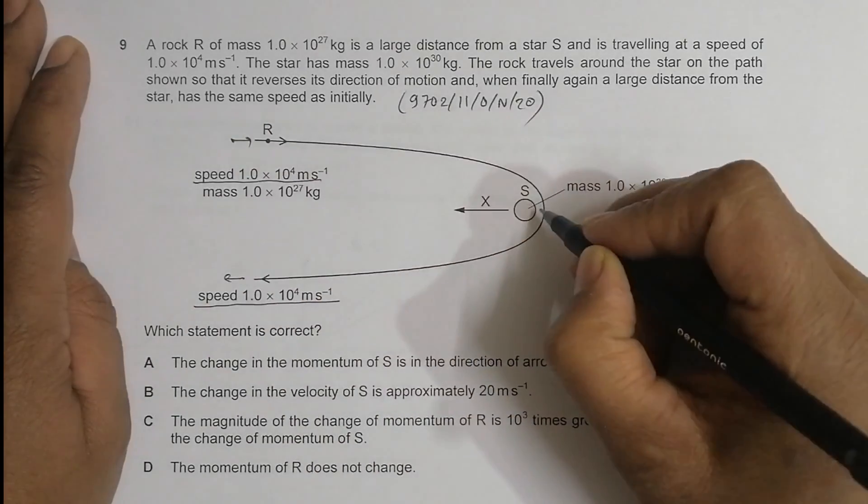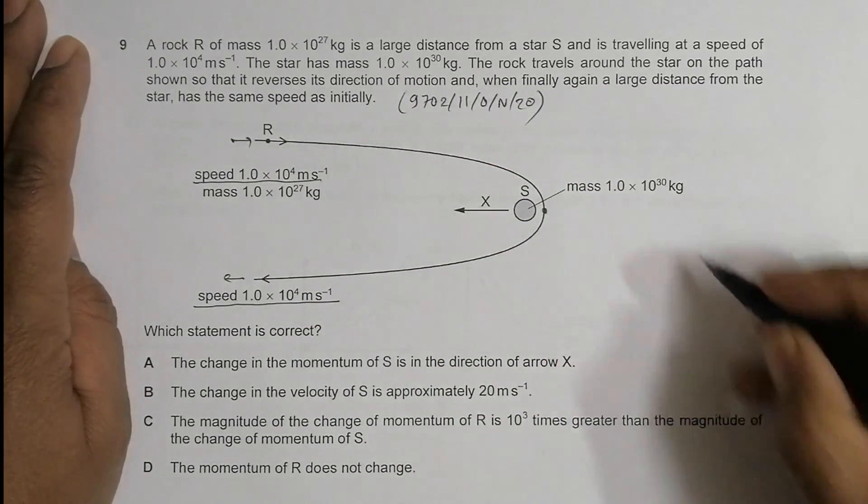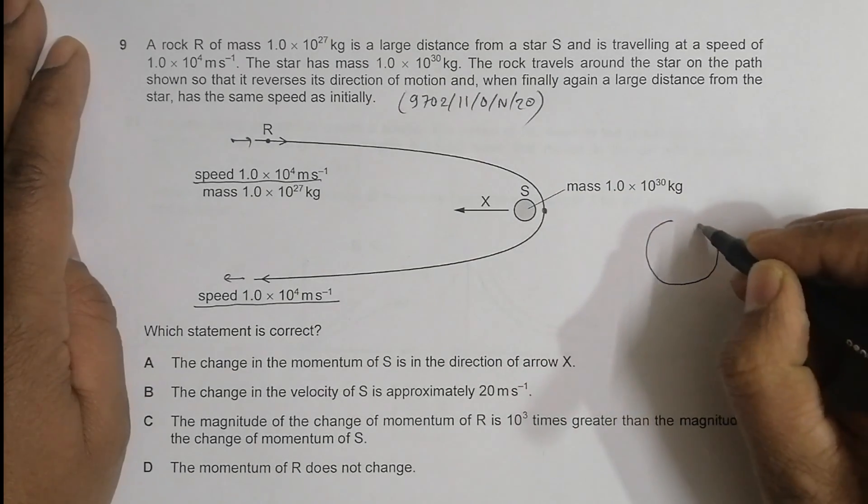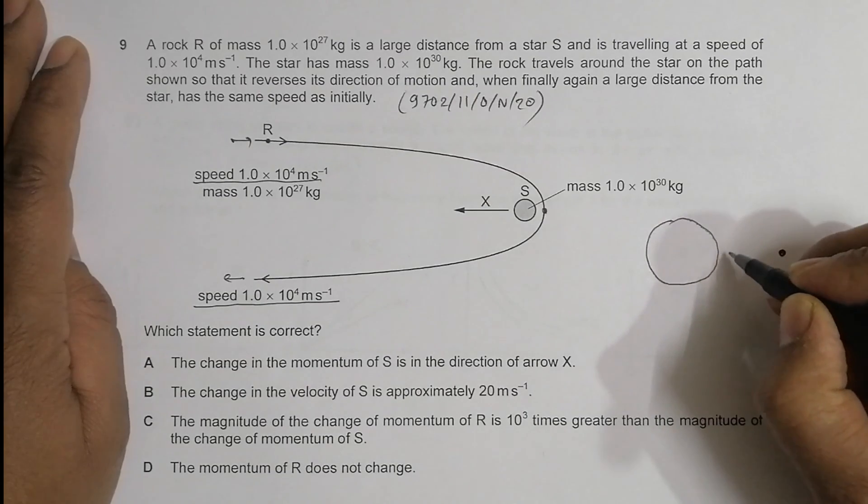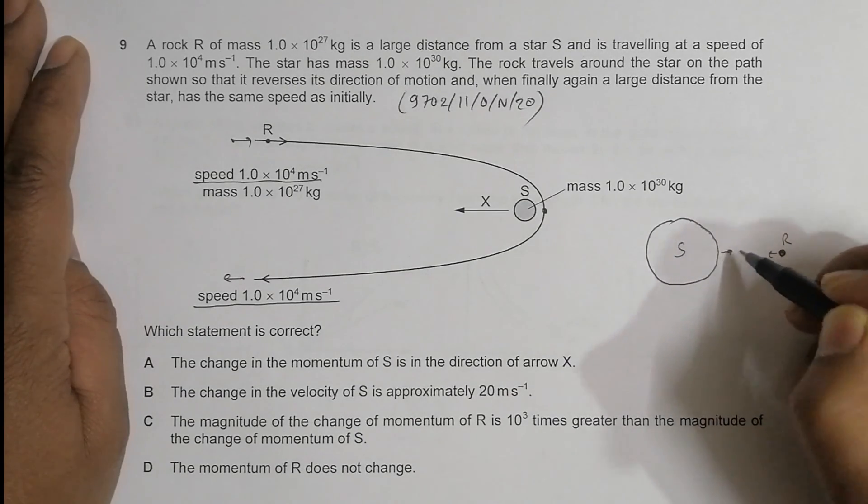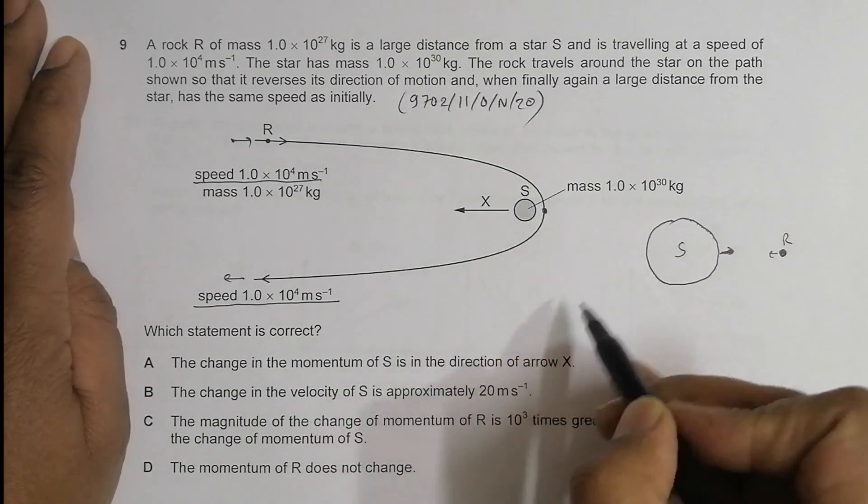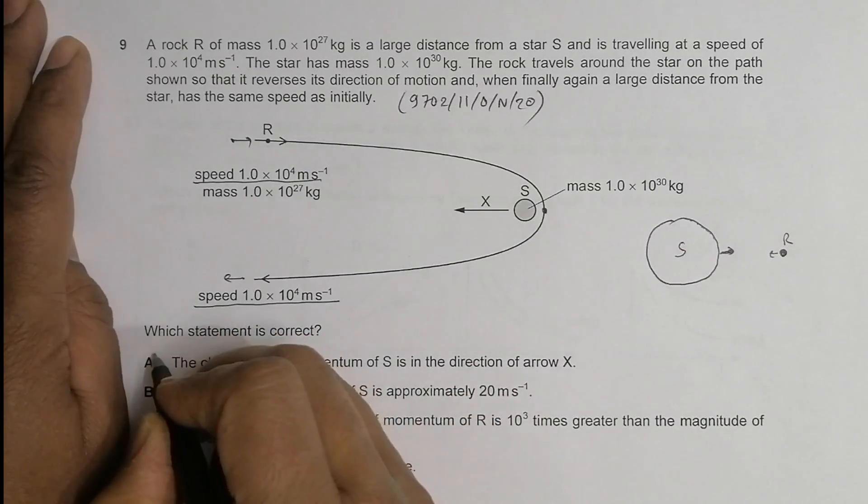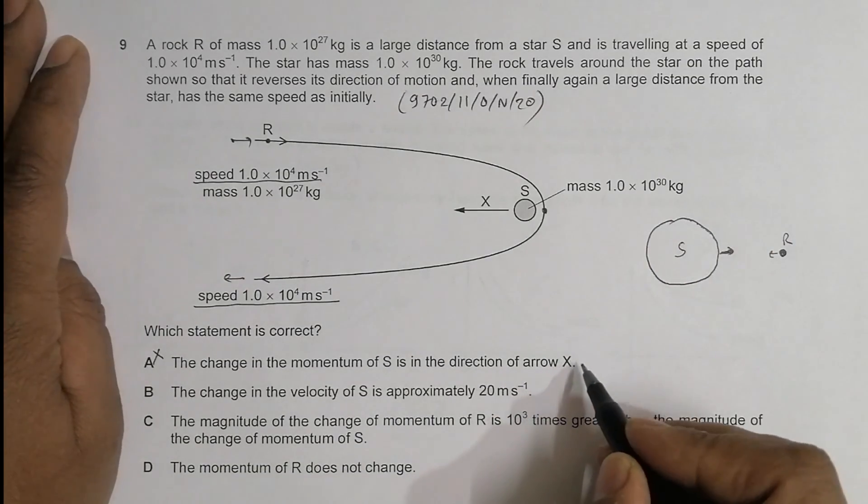Let's see this in a magnified manner. When the rock and star are together, each will experience gravitational force. S will be pulled here and R will be pulled here. So the change in momentum of S will be in this direction, not in the direction of arrow X which points to the left. So option A is not true - the momentum change should be to the right, not to the left.